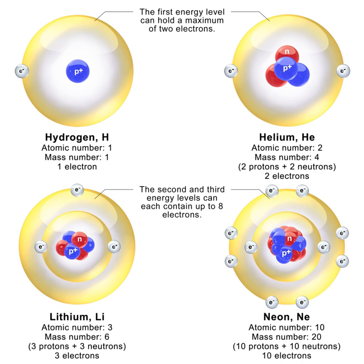Atomic nuclei are formed by a number of protons, Z the atomic number, and a number of neutrons, the neutron number, bound together by the nuclear force. The atomic number defines the chemical properties of the atom, and the neutron number determines the isotope or nuclide.